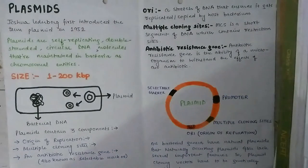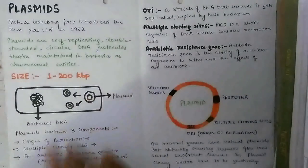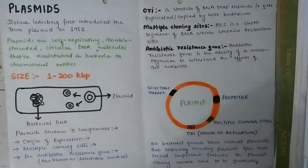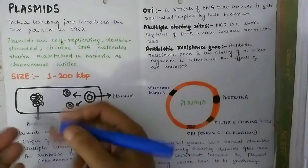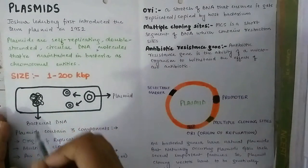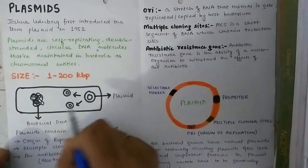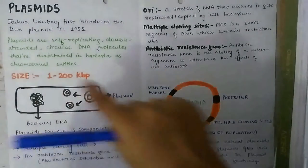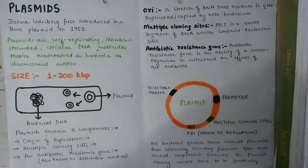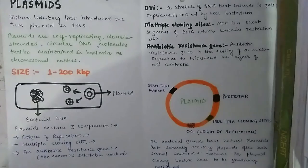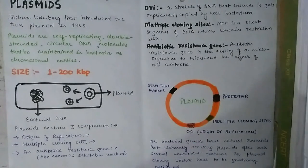The plasmid contains three components: the origin of replication, the multiple cloning sites, and the antibiotic resistant gene. Here we have a diagram of a bacterial cell, which contains the bacterial genome scattered within the cytoplasm because bacteria don't have a well-organized nucleus. The plasmid present in the bacterial cell is self-replicating, double-stranded, and circular. The double-stranded circular form of the plasmid is very stable compared to the linear form. The antibiotic resistant gene is also known as a selectable marker.